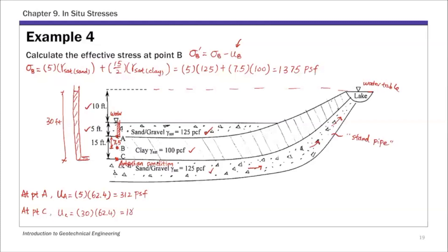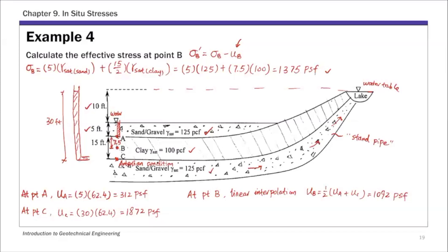So we estimate the pore pressure at C using 30 feet of water, giving 1872 PSF. Now we have pore pressure at A and at C. For point B, we do a linear interpolation: UB equals half of UA plus UC, which gives 1092 PSF. Now we have the total stress of 1375 PSF and the pore water pressure of 1092 PSF. The effective stress at B is total stress minus pore water pressure, which equals 283 PSF.